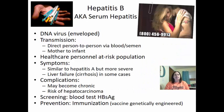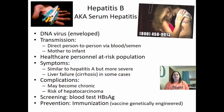Hepatitis B, also known as serum hepatitis, is a DNA virus that is enveloped. Transmission is direct person-to-person via blood or semen, and also from mother to infant. Healthcare personnel are at very high risk due to frequent contact with infected individuals and their blood. Symptoms are similar to hepatitis A but more severe, potentially leading to liver failure or cirrhosis. Complications include chronic hepatitis and risk of hepatocarcinoma — a type of liver cancer. Screening is done through a blood test for the hepatitis B antigen. Prevention is through a genetically engineered vaccine given as a series of two vaccinations.